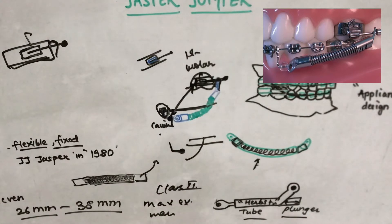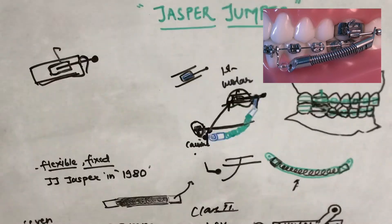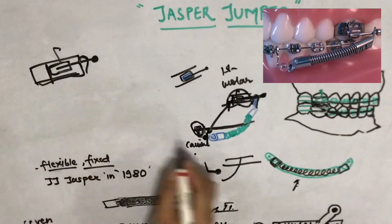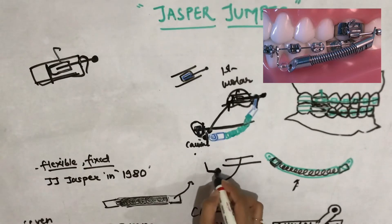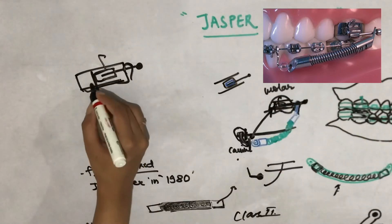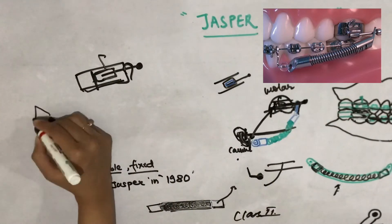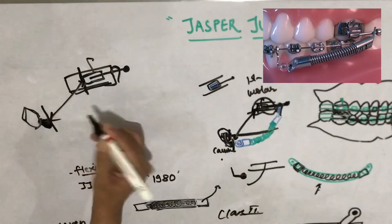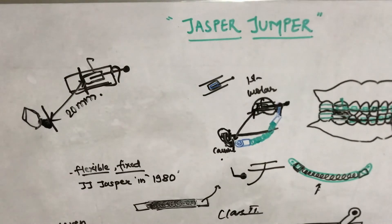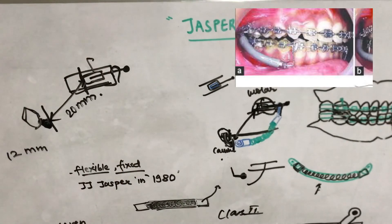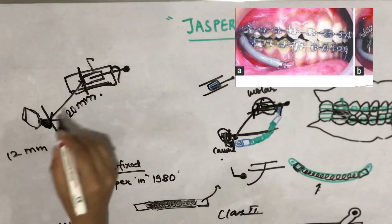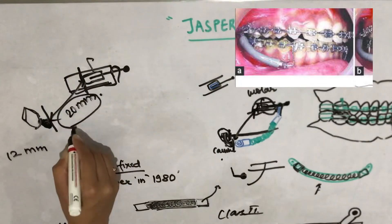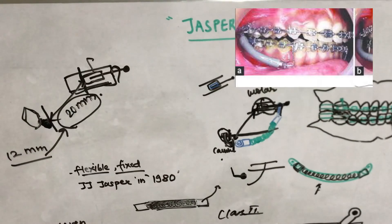Regarding the mechanism of action: the force module size is selected by first asking the patient to bite in centric occlusion, then measuring the distance from mesial to the facebow tube to the distal of the canine or the Lexan ball. To this measured distance, 12 mm is added to get the required length of the force module.